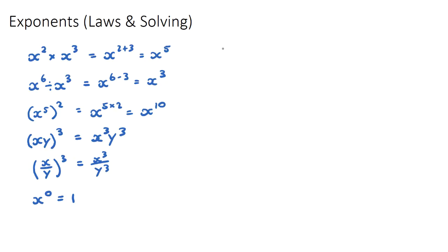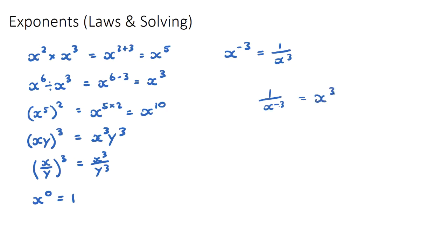If you have x to the power of negative 3, a negative power means you can rewrite this as 1 over x cubed — you put it on the denominator and convert the negative power to a positive power. Conversely, if you have 1 over x to the negative 3, the negative power on the denominator means it becomes just x to the 3.